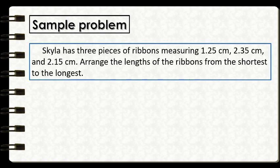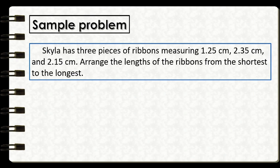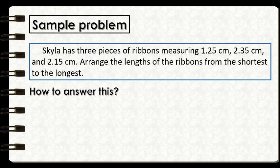Let's take this simple problem. Skyla has three pieces of ribbons measuring 1 and 25 hundredths centimeters, 2 and 35 hundredths centimeters, and 2 and 15 hundredths centimeters. Arrange the lengths of ribbons from the shortest to the longest. To answer this problem, we will apply the same steps when we compare decimal numbers.